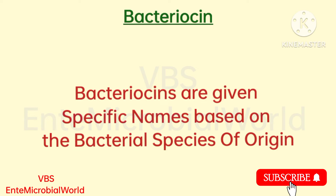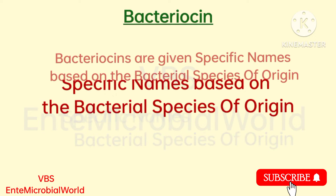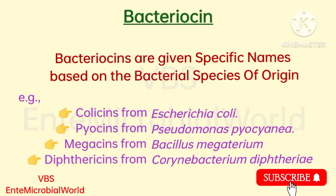Bacteriocins are given specific names based on the bacterial species of origin. For example, colicins, pyocins, megasins, etc.